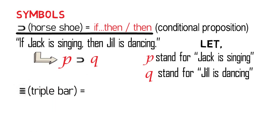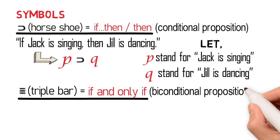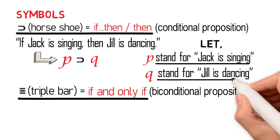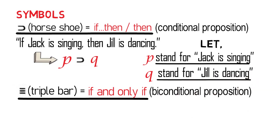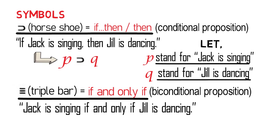The symbol triple bar, which is read as 'if and only if,' is used to symbolize the connective of a biconditional proposition. Biconditional propositions are connected by the words 'if and only if.' And if we let P stand for 'Jack is singing' and Q for 'Jill is dancing,' then the proposition 'Jack is singing if and only if Jill is dancing' is symbolized as P ≡ Q.